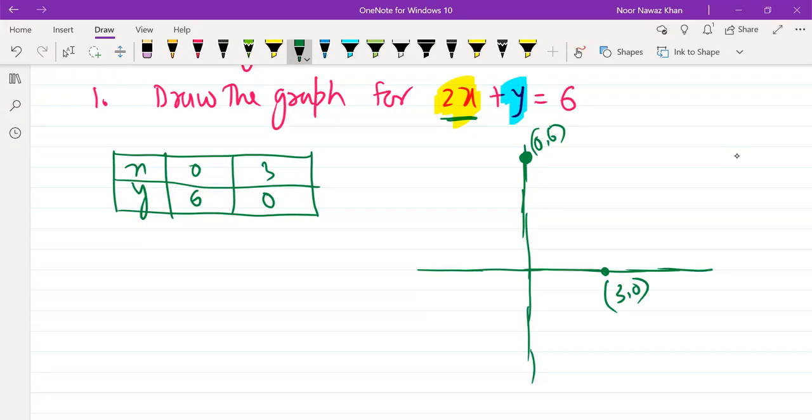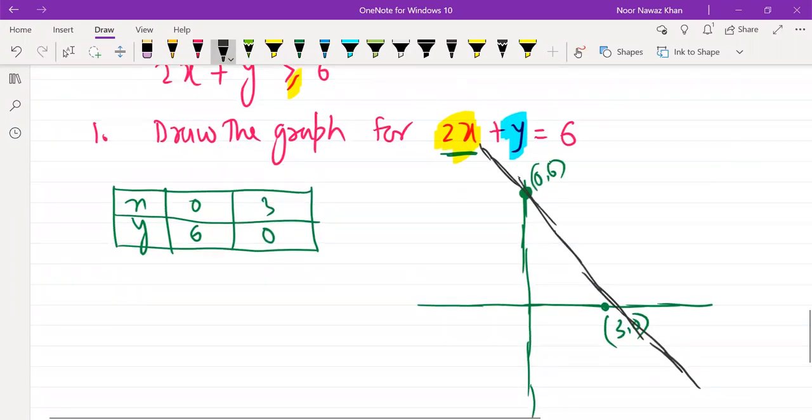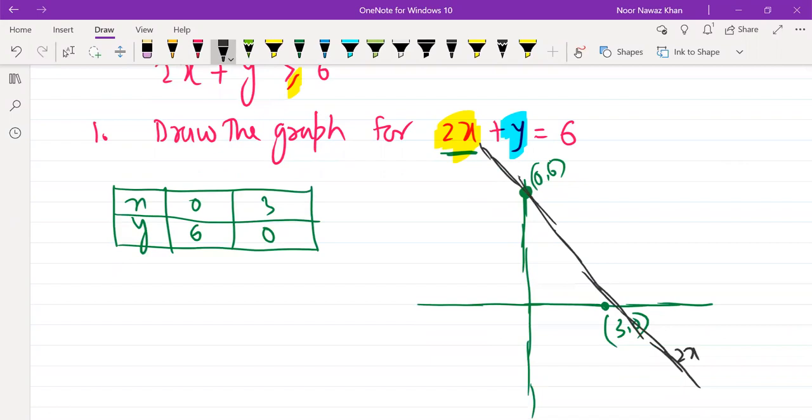Now, let's see this equation. Is equals to given or not given? If this equation is equal to, then the line will be bold. Otherwise, it will be dotted. Then you draw a line. So, the first part is to draw a line. And we will also mention here that this equation is 2x plus y is equal to 6.